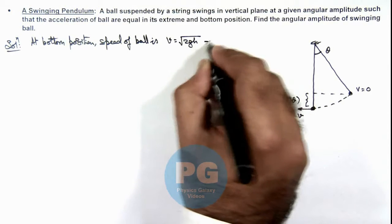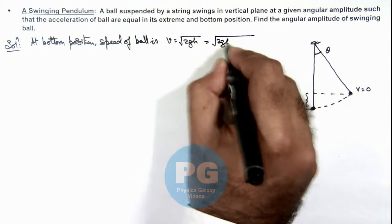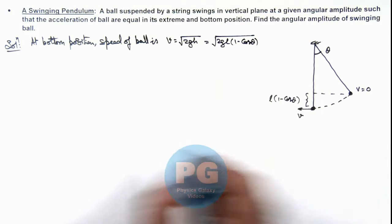So this will be root 2gl(1 - cos theta), that is the speed at the bottom point.